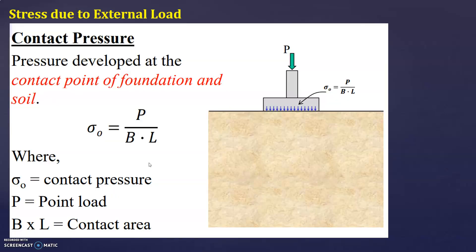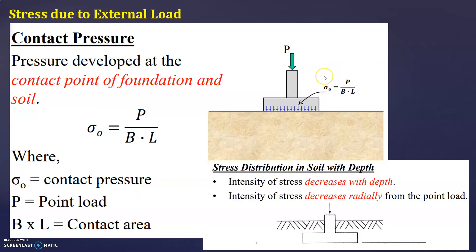Stresses due to external load are mainly due to contact pressure — that is, pressure developed at the contact point of the foundation and soil. When pressure is developed at the contact point of foundation and soil, it is called contact pressure, and it is calculated by sigma 0 equals P divided by (B into L), where sigma 0 is contact pressure, P is the point load, and B into L is the contact area. Regarding stress distribution in soil with depth: intensity of stress decreases with depth, and intensity of stress decreases radially from the point load.